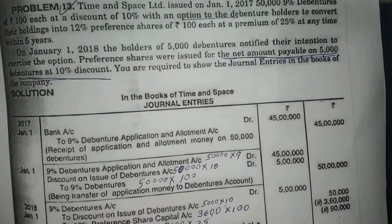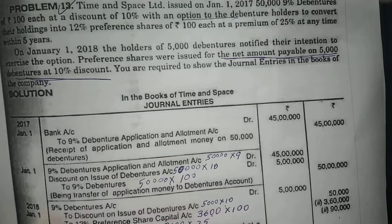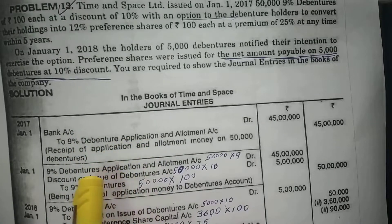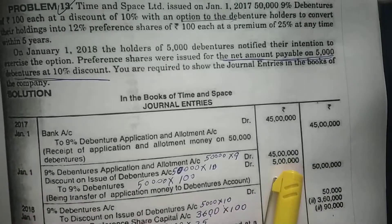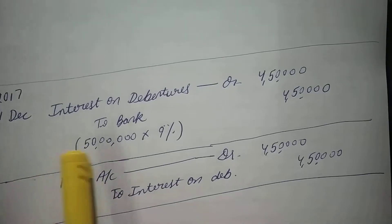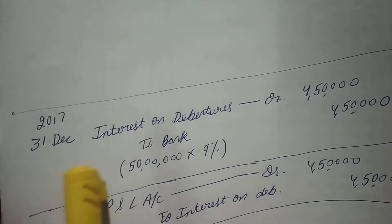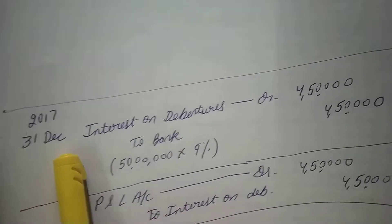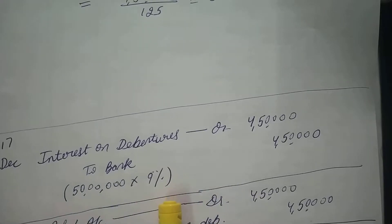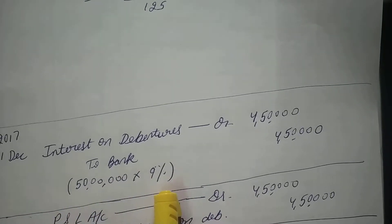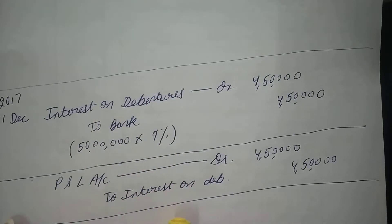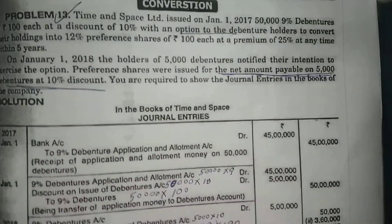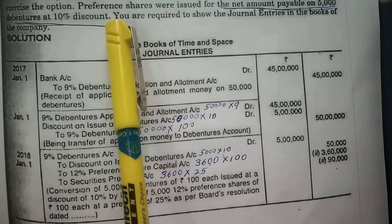As per the solution, students, they have just jumped over to 2018 without making the entry for interest. So you will add two entries: on 31st December 2017, Interest on Debentures Account debited to Bank — 50 lakhs at 9% gives 4,50,000 — and then transfer interest on debentures. These two entries they have missed, but you will pass them.